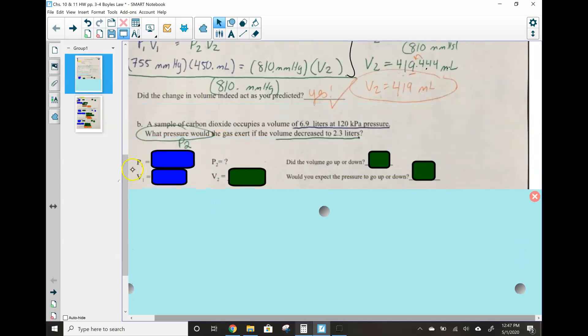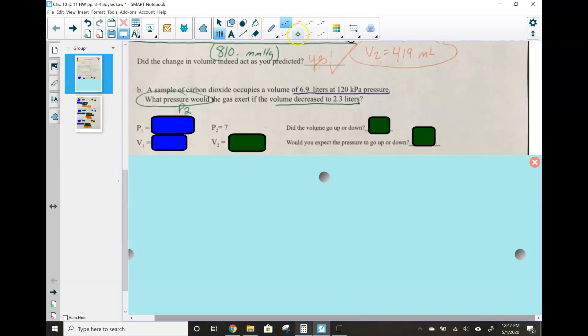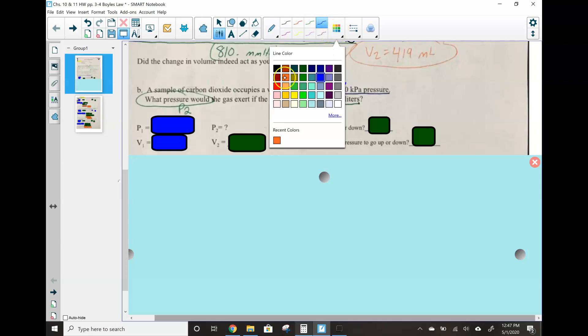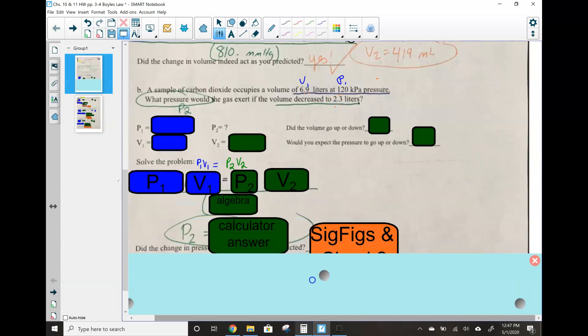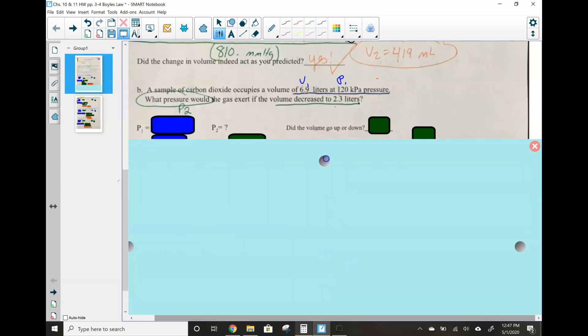Okay, let's try problem B. A sample of carbon dioxide occupies a volume. So let's start diagramming our problem here. A volume of 6.9 liters, so volume 1, at 120 kPa. So this is our pressure one. Now let's just kind of take a sig fig look right here. Two sig figs, two sig figs, that zero is a placeholder doesn't count. We got two sig figs. So I can make myself a little note down here. I know I'm going to need to round to two sig figs when I get to my final answer. Okay. So then what pressure, so P2 equals question mark, what's my final pressure, would the gas exert if the volume decreased to 2.3? So this is going to be my V2.